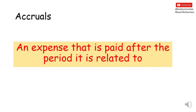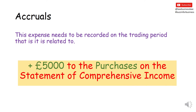What you actually have here in accountancy is something called an accrual. An accrual is an expense that's paid after the period it relates to, and that's exactly what we've got here. This relates to a purchase made in the previous accounting period but actually paid in the new accounting period. So we need to record this accrual on the trading period it relates to, which would be the 2019-2020 accounts rather than 2020-2021.